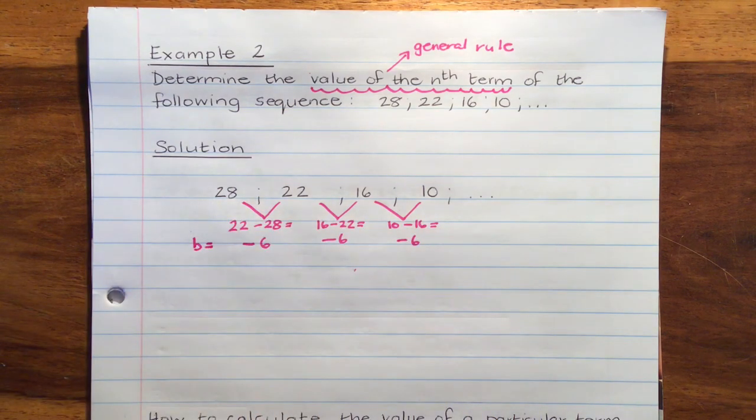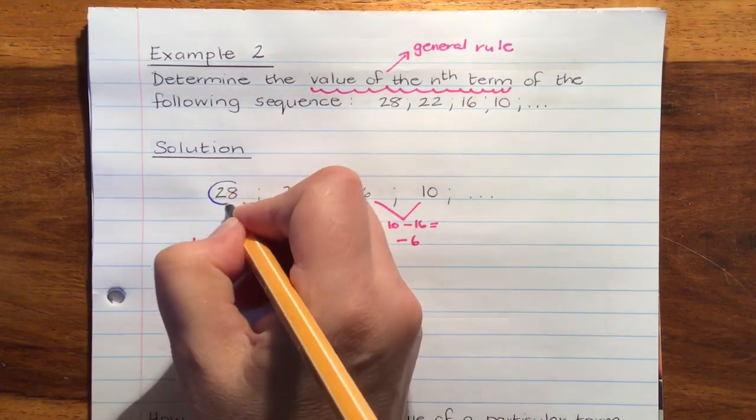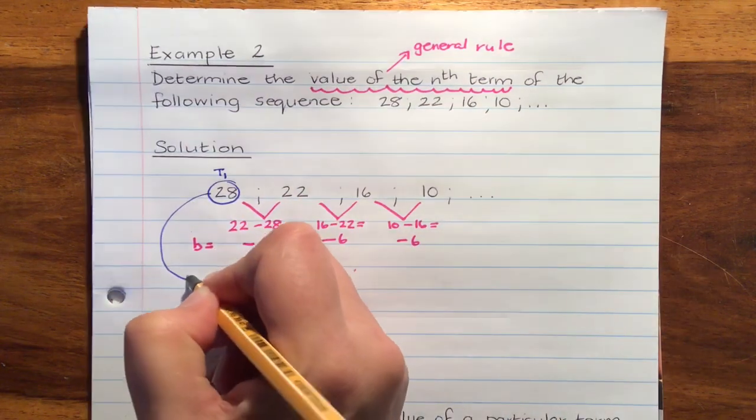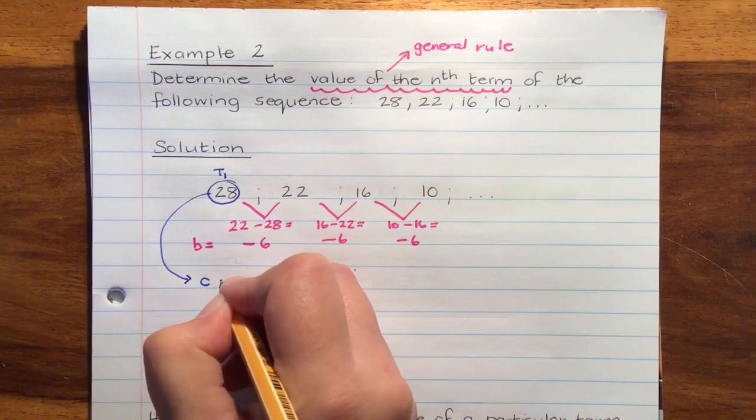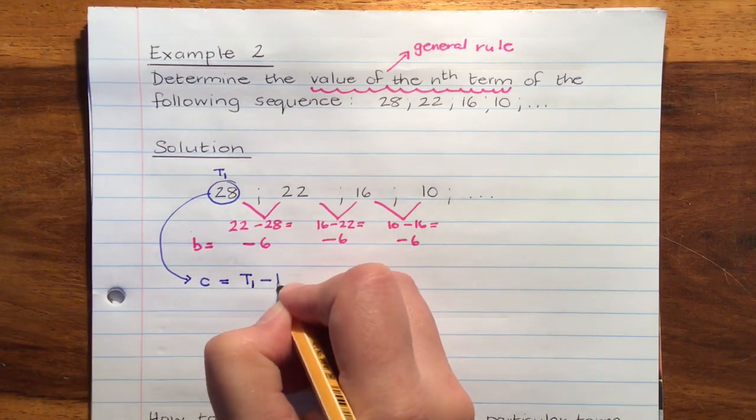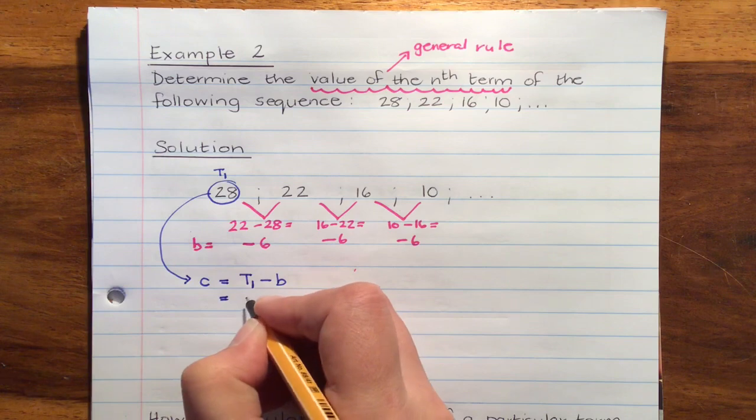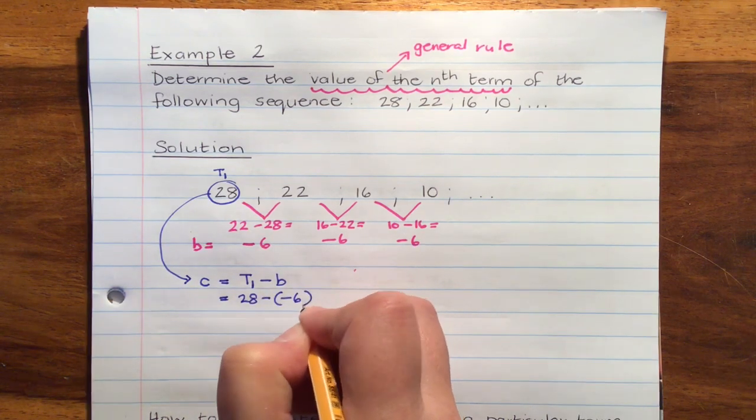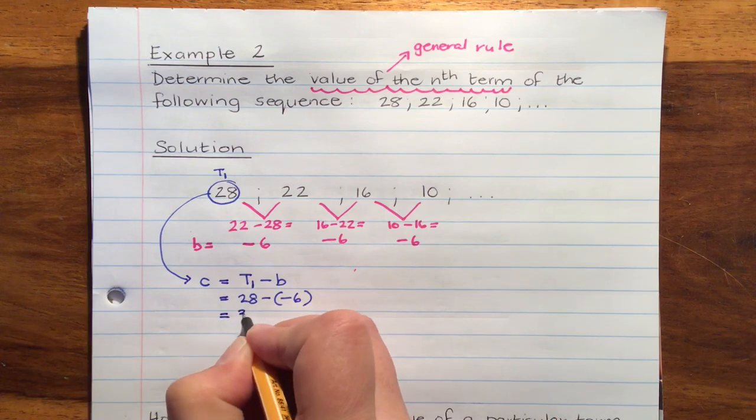Then to get the C value, we take T1. And we say C is equal to T1 minus B. So it's 28 subtract negative 6, which gives us a value of 34.